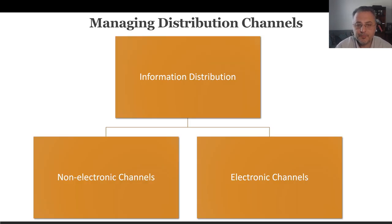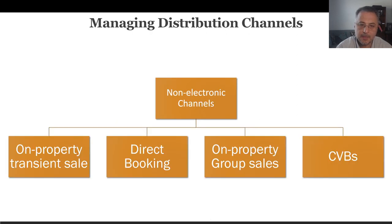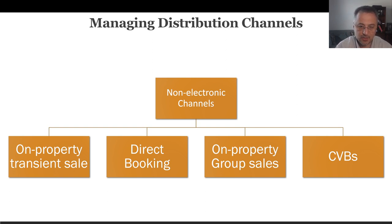Overall, we can talk about two different types of distribution channels. Non-electronic distribution channels are those in which room rate and availability information is delivered to buyers at a more personal level. In today's hotel environment, there is no lower-cost distribution channel than on-property transient room buyers. This consists of walk-ins and check-outs. Walk-ins are looking for an immediate purchase — they are there to buy.